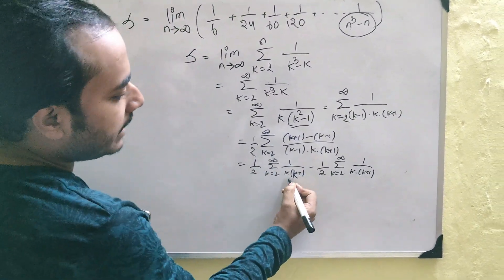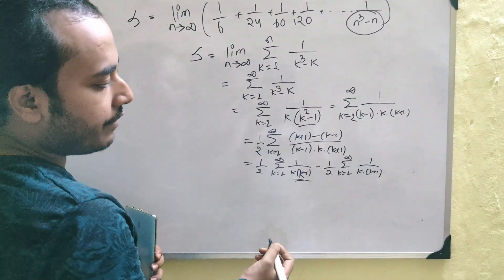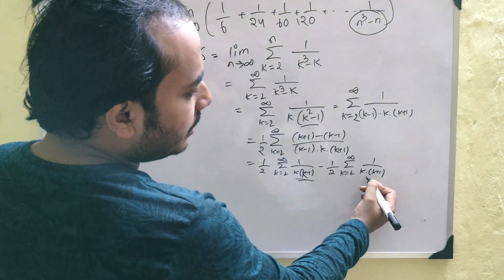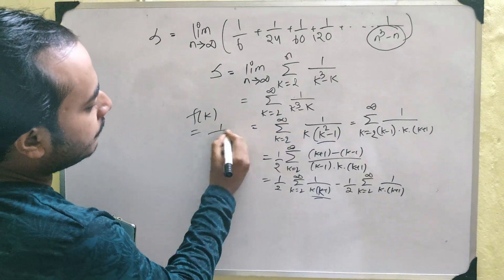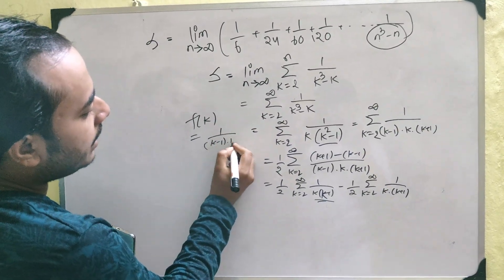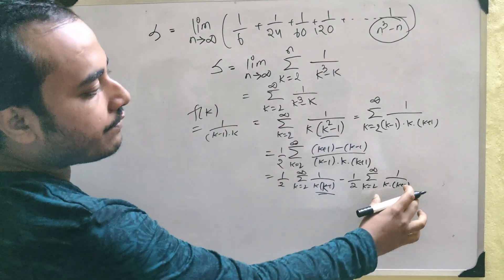Now, if you assume that this function is f of k, then you can see that this function is f of k plus 1. I mean, what I am saying is simply assume that f of k is 1 by k minus 1 into k and if this is the case, this is f of k plus 1.